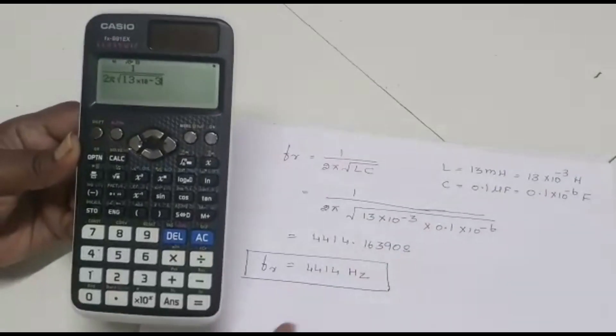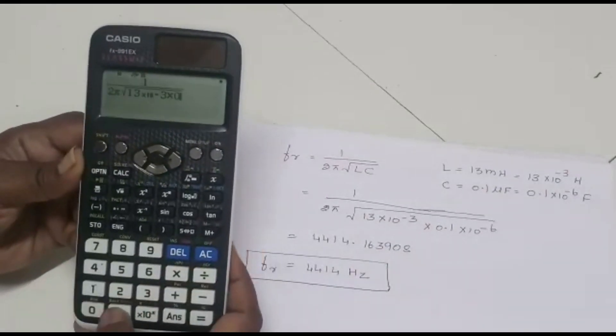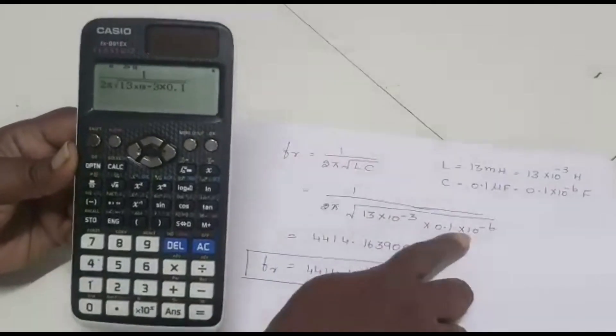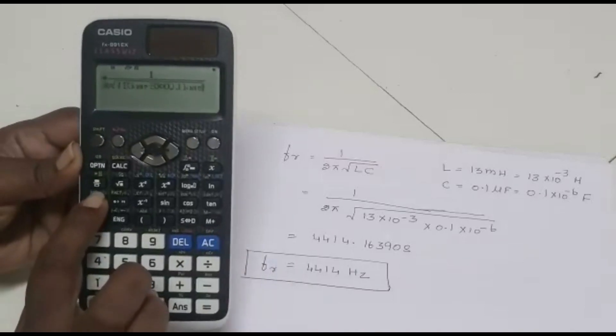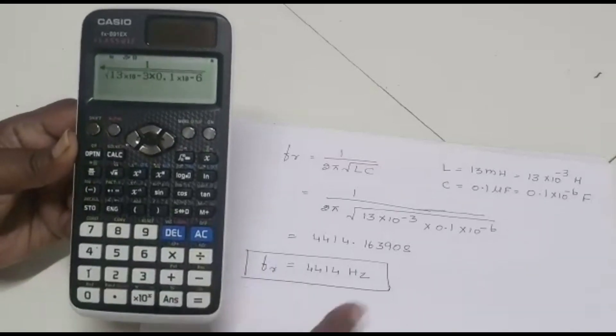Next, it should be multiplied with into 0.1. Again, we have the power. Press this button into 10 power x button. Again, minus 6.